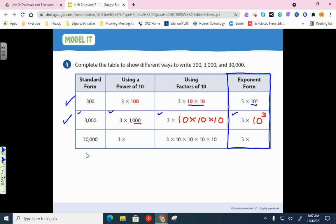30,000, that's 3 times 10,000. And we know you have to multiply 10 four times to get 10,000. And that gives us 10 to the fourth over here. So, again, all of these values are the exact same. They're just shown in four different ways.